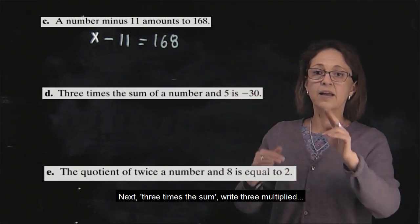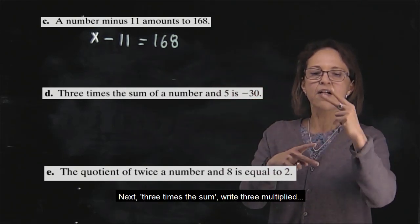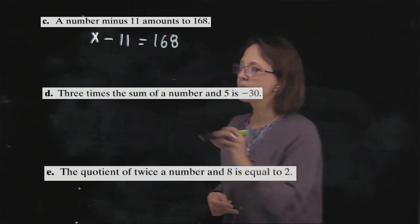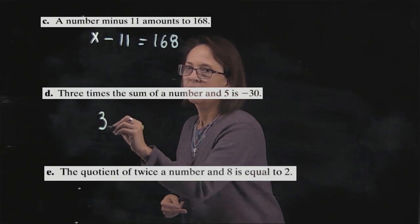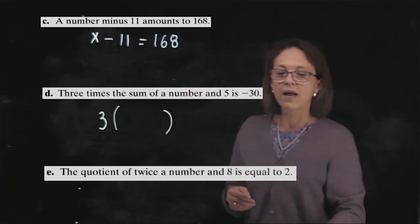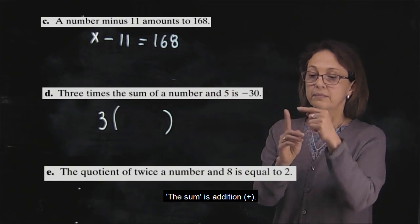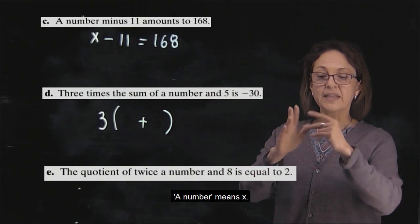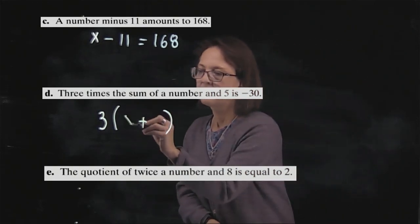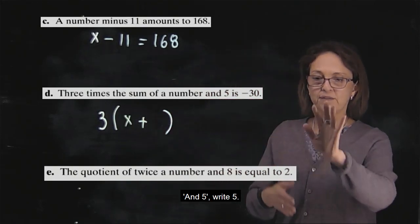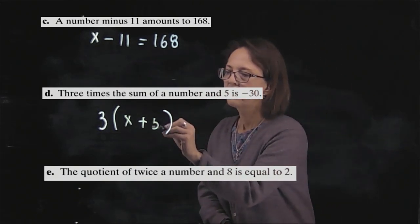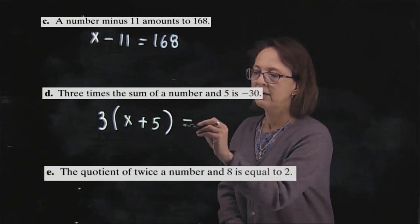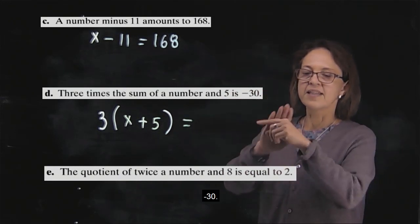Next. Three times the sum — three times the sum of a number means x, and five. The word is means equal. Negative three.